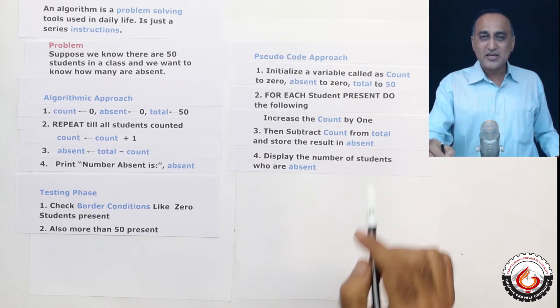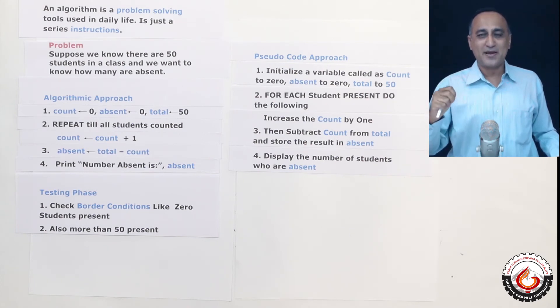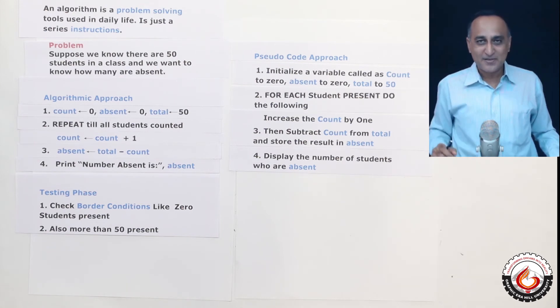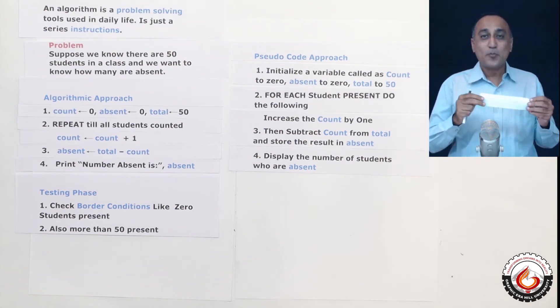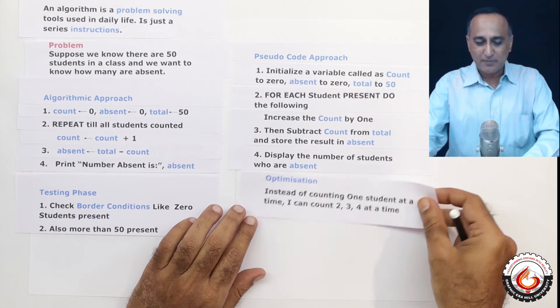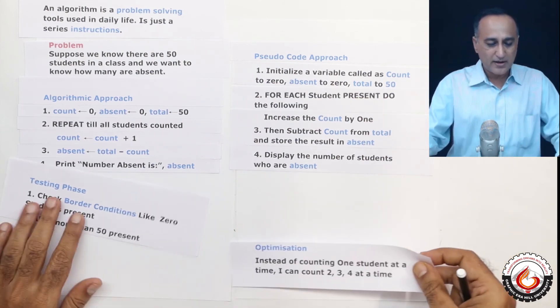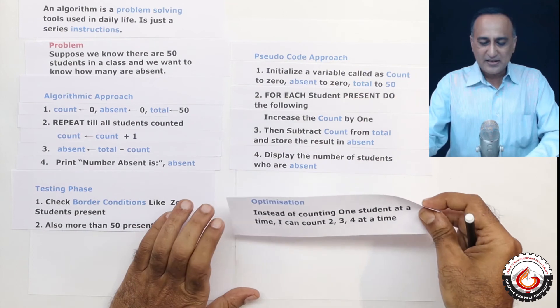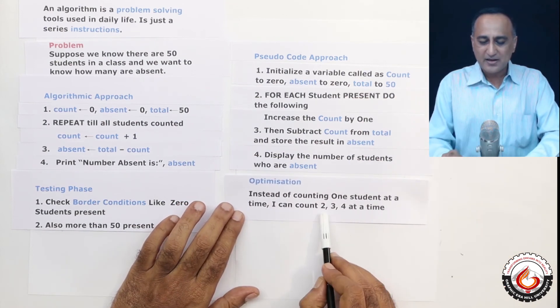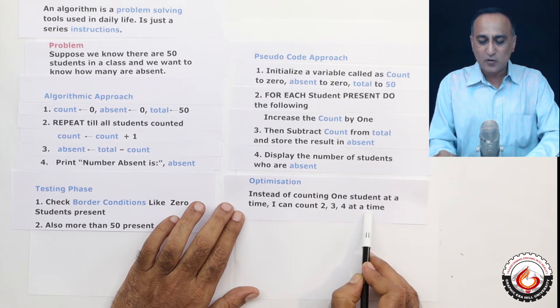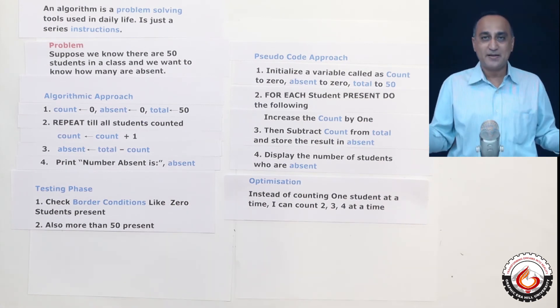Now, here, if you see, I was counting one student at a time. I can also count two students at a time, I can count three students at a time, I can count five students at a time. That way, my process of counting the total number of students is going to be faster. That particular thing is called optimization in algorithmic development. So in optimization, instead of counting one student at a time, I can count two, I can count three, I can count four at a time, depending how I am comfortable.